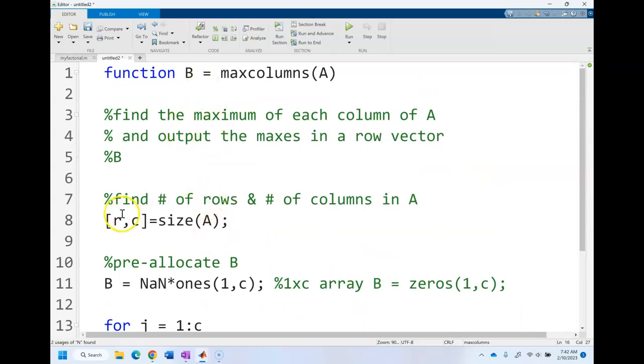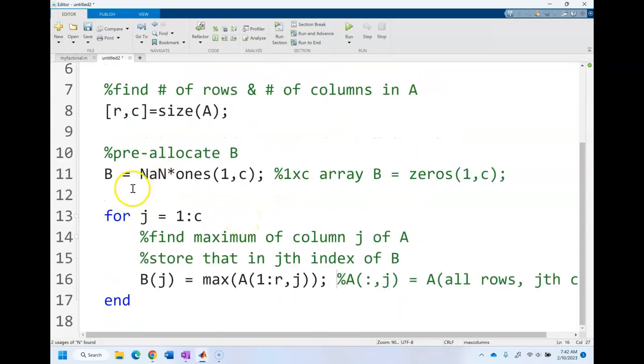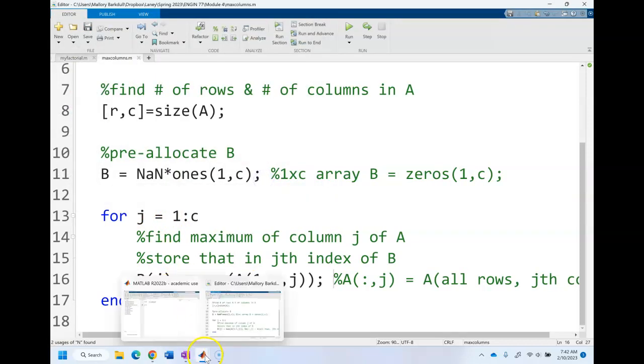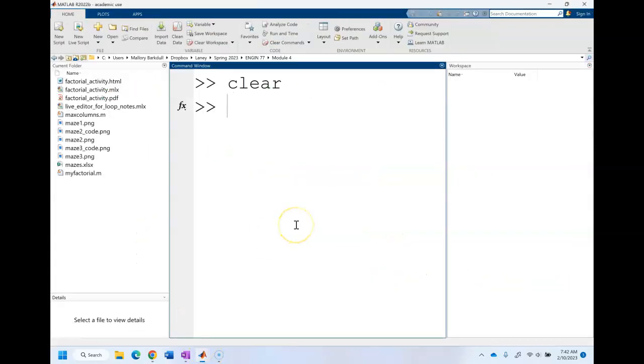So my function, I find the size of A, pre-allocate B, and then use my for loop. So now I don't think I have any errors, but let's check. I didn't think I had any errors in the last one and I did. So let's make an array: one, two, three, four, five, seven, eight, three, two, one, and that's ten, forty-four, I don't know, thirty, seven, eight.